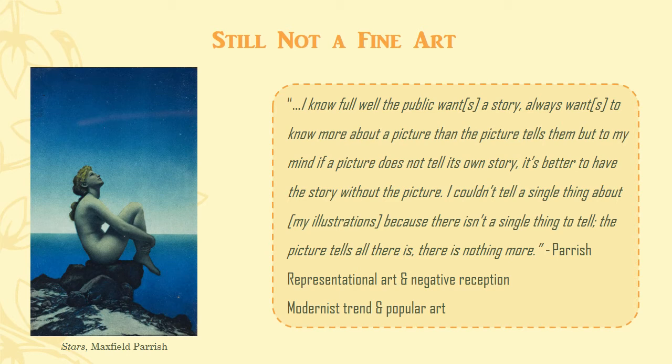However, Parrish also saw the end of the Golden Age coming. Modern art was changing and rising in popularity, replacing representational art's place in pop art culture. Illustrative art's reputation had not changed in a positive way, still having a commercial, soulless association with it. Yet artists tried to change, tried to regain their popularity. But as Parrish commented, "We are at the mercy of the public. We guess at what they will like, and, as we all do, we guess wrong about half the time."